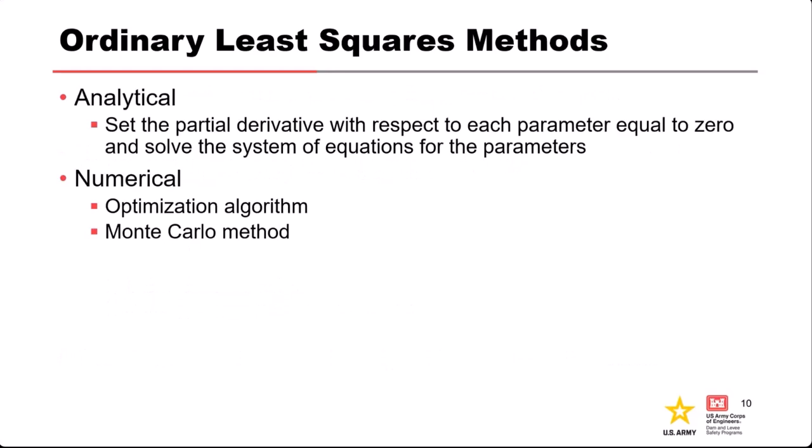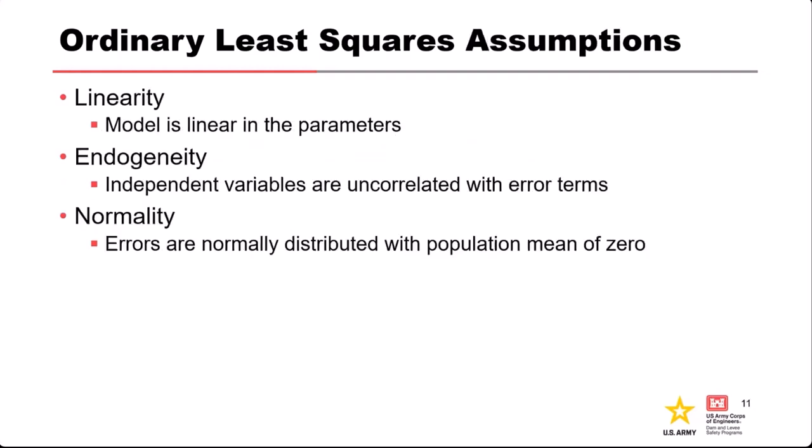There are two basic ways to solve an ordinary least squares problem. One is analytical — an OLS problem is simple enough that we can derive explicit equations to solve for the unknown parameters by setting partial derivatives equal to zero and solving that system of equations. Or you can do it numerically using an optimization tool like Excel or the Monte Carlo method, which is essentially a guess-and-check type of approach.